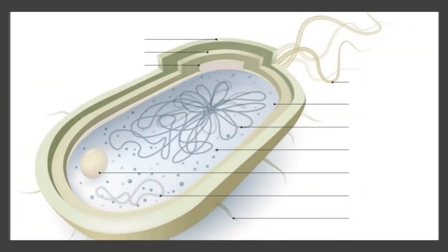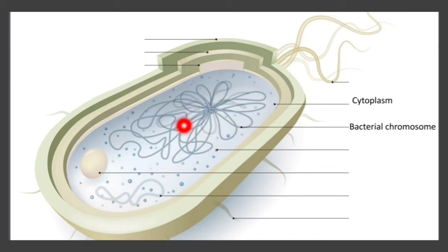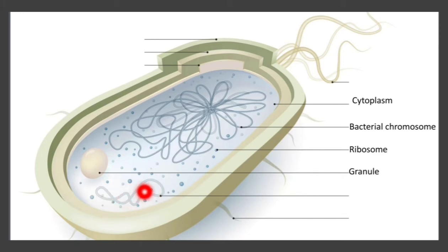This is the basic structure of the bacteria. Let's label the different structures. Starting here, this is the cytoplasm. Next, here you can see the bacterial chromosome. These blue dots are actually ribosomes. What you are seeing here is actually a granule, and here you can see extra genetic material — this is called a plasmid.